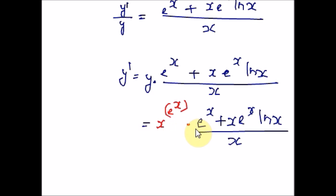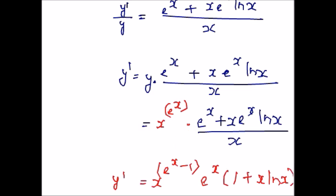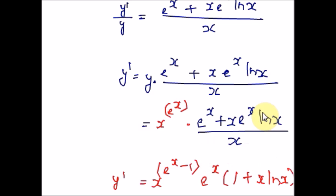Now combine the powers of x, giving x raised to e raised to x minus 1. Finally, shift everything to the right side of the equation and keep y dash isolated on one side. This is how we do logarithmic differentiation for this example.